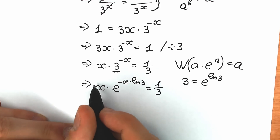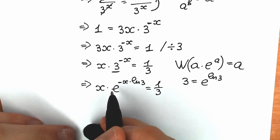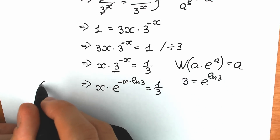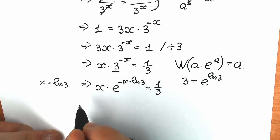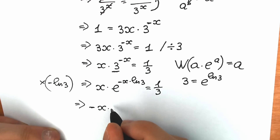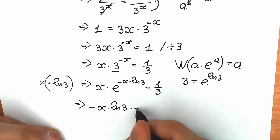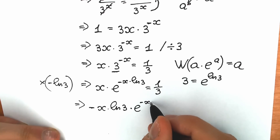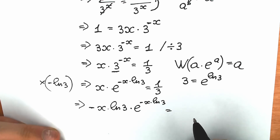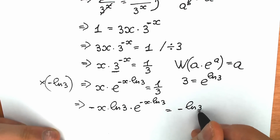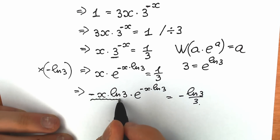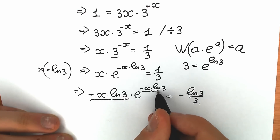Let's multiply both sides by minus natural log 3 to create the same expression on the left side. As a result we have: minus x times natural log 3, times e to the power minus x times natural log 3, equals one third times minus natural log 3, which gives minus natural log 3 over 3. Now if you look closely, we have minus x times natural log 3 as both the coefficient and the exponent — this matches the form a times e to the power a.